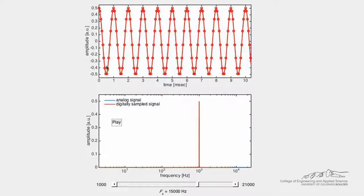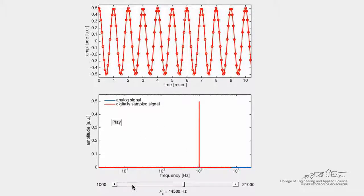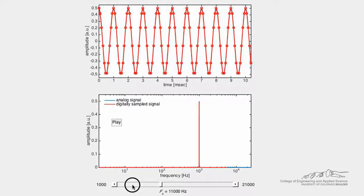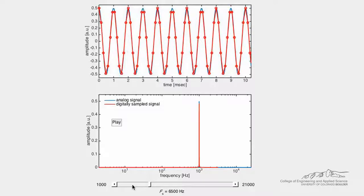Each signal is shown in both the time domain and the frequency domain. As the sampling frequency decreases, we start to lose information in our digital representation.